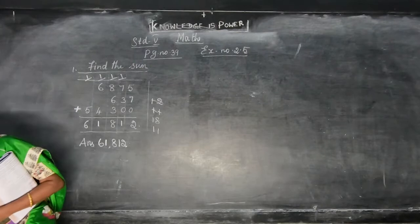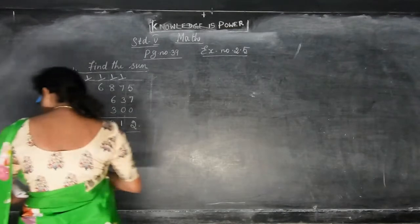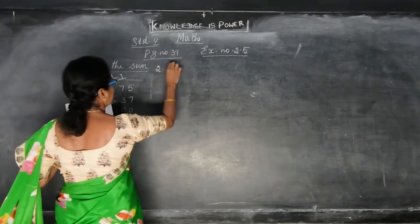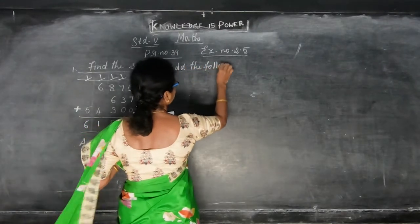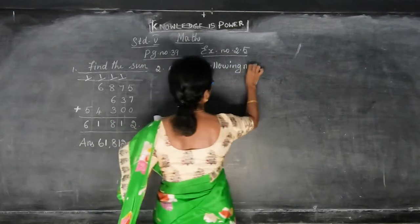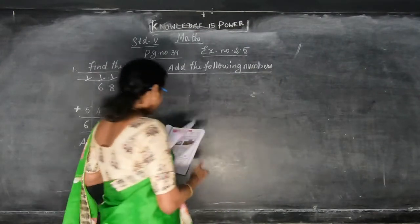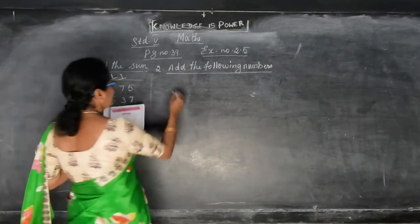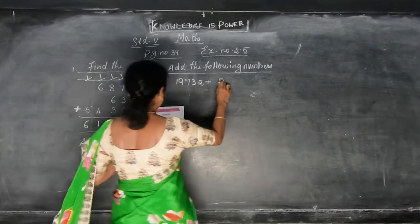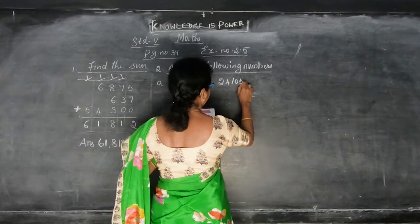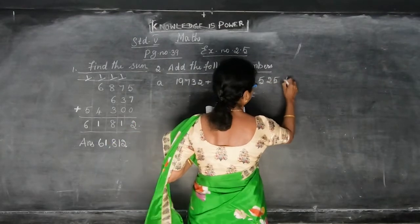Okay children? So like this you can do the addition sums. The next sum: they are given 5 sums — add the following numbers. I will do one sum; the remaining you have to do as homework. 19,732 plus 24,105 plus 525 plus 48.